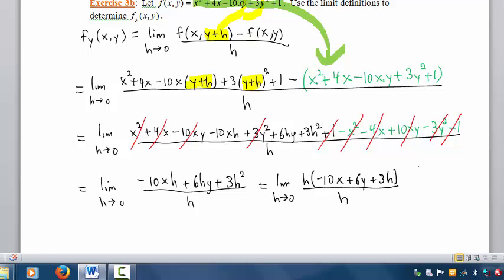We have factored out h and we divide h divided by h down to 1.